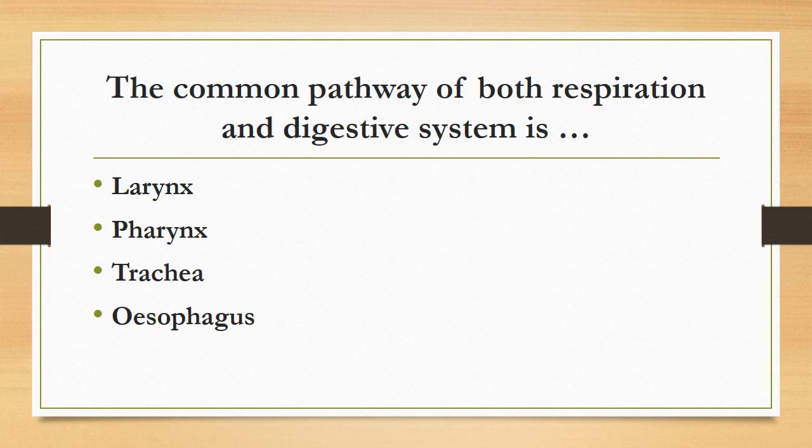The common pathway of both the respiratory and digestive systems is: larynx, pharynx, trachea, or esophagus? The correct answer is pharynx. The pharynx is the common pathway shared by both systems, while the trachea and esophagus are separate pathways for respiration and digestion respectively.